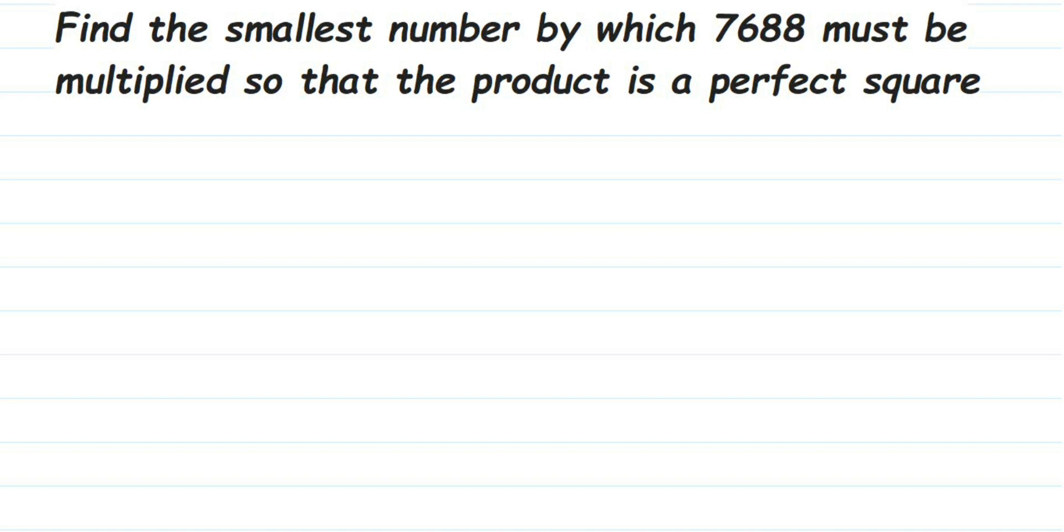Hey everyone, here's a question on square and square root. Find the smallest number by which 7688 must be multiplied so that the product is a perfect square. This number is not a perfect square, so we have to make it a perfect square by multiplying with the smallest number.